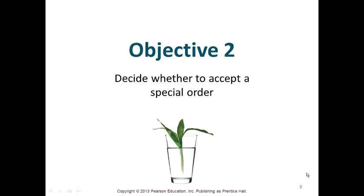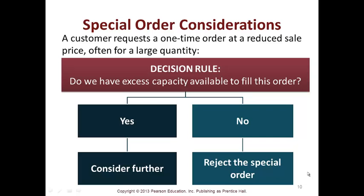Objective two is to decide whether to accept a special order — when a customer requests a one-time order at a reduced sale price, often for a large quantity. Decision rule one: do we have excess capacity available to fill the order? If yes, consider it; if no, reject it. Capacity can mean your manufacturing plant, building space, or people.